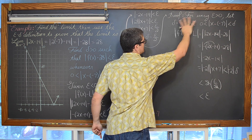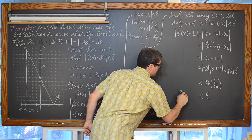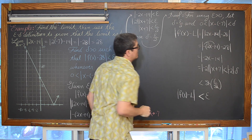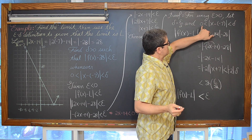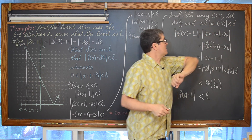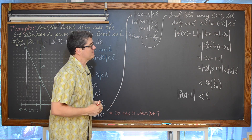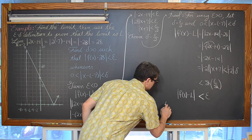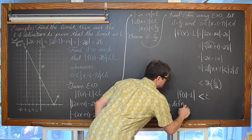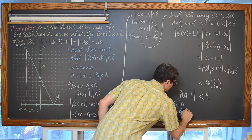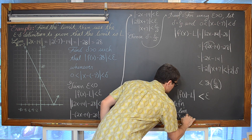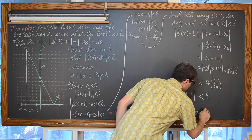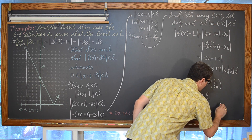That is the end of the last example. By the epsilon-delta definition, we have proven that the limit as x approaches negative 7 of the absolute value of 2x minus 14 is equal to 28.